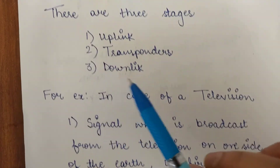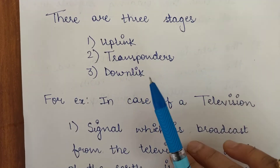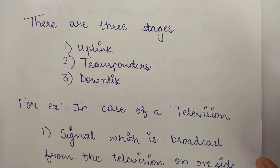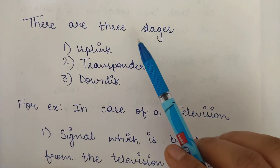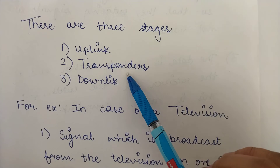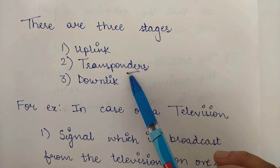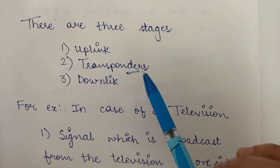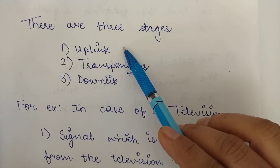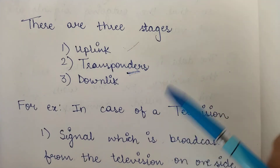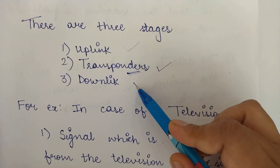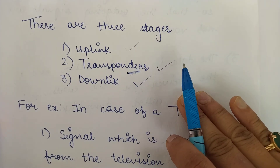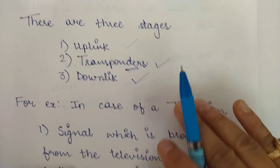How do communication satellites work? There are three stages: the uplink, the transponders, and the downlink. These are the three stages in which a communication satellite works. For example, communication satellites can be used for applications like radio, television, internet, and military applications.